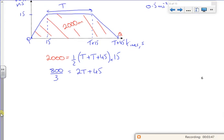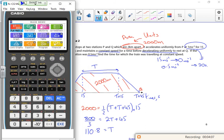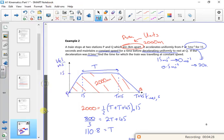Right, so if I take the 45 and I half it, it gives me roughly 110.8 for T. Let me double check, make sure that's right. So 800 over 3 minus 45 divided by 2. There you go, 110.8. So we're looking at roughly 111 seconds.